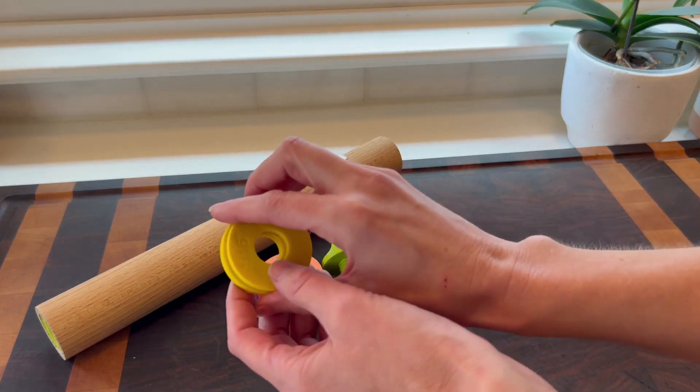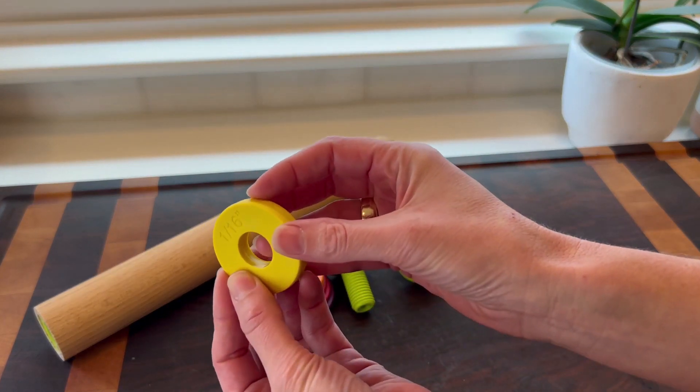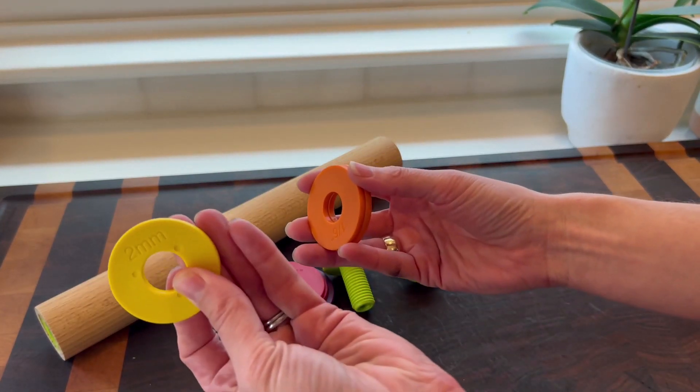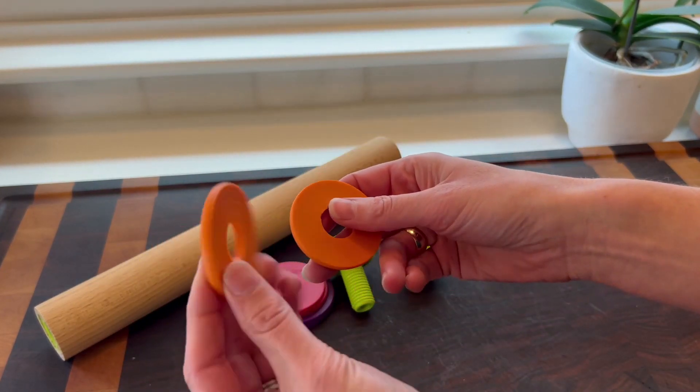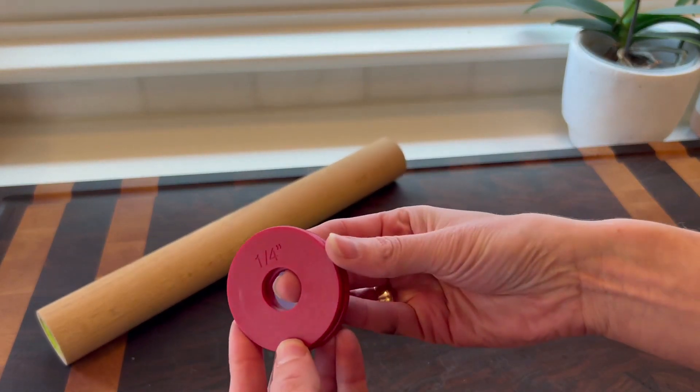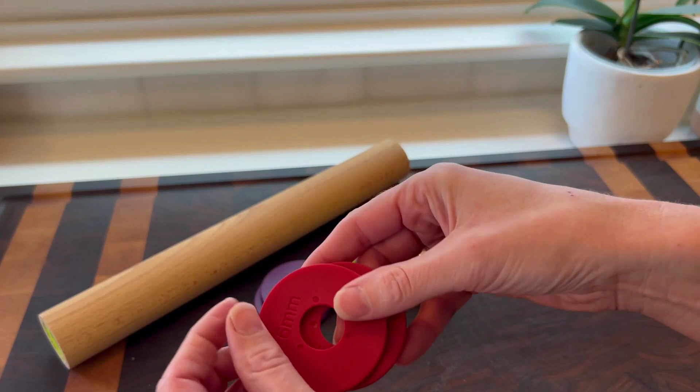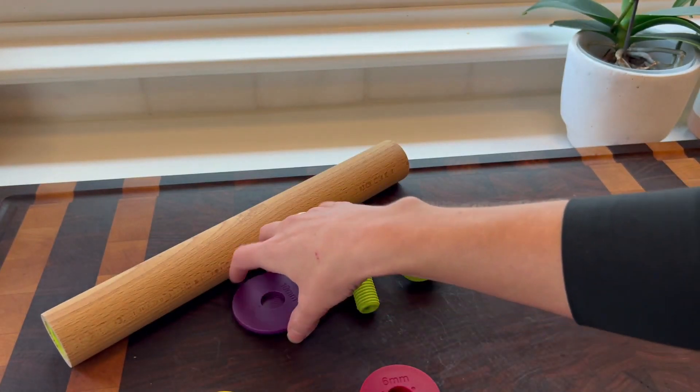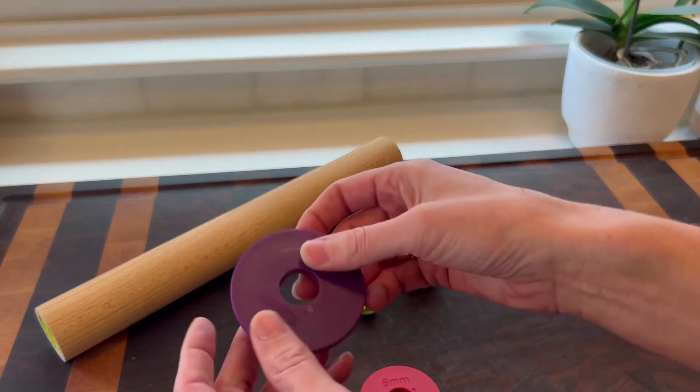So if you want very thin dough, one and one-sixteenth inch, also known as two millimeters, one-eighth inch, four millimeters, quarter inch dough, and for a pie, six millimeters. And if you want to go really thick and even, you can do the ten millimeter, three-eighths of an inch dough.